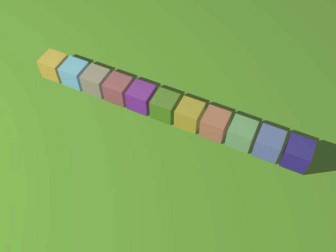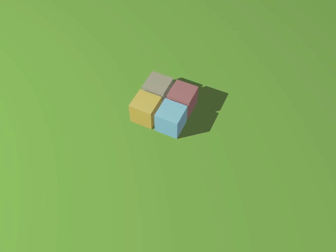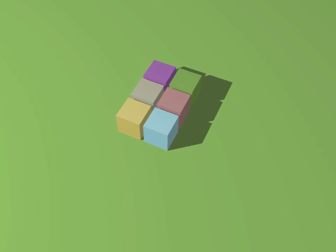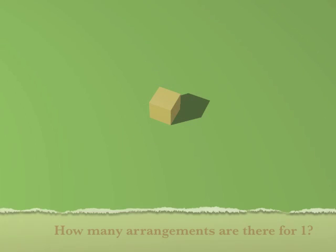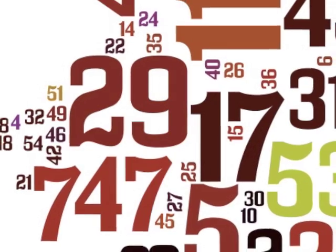Prime numbers only have two rectangular arrangements of blocks: a single column or a single row. Other numbers — like four, six, eight, nine, twelve, and so on — have many more rectangular arrangements and are called composite numbers. This raises the question about the number one: it only has one arrangement, so it doesn't seem to be prime.